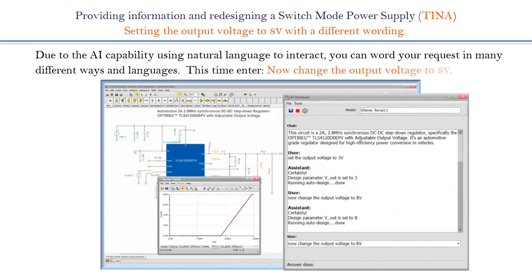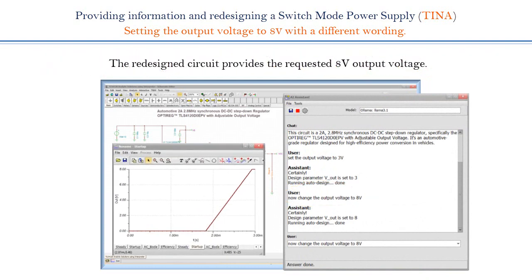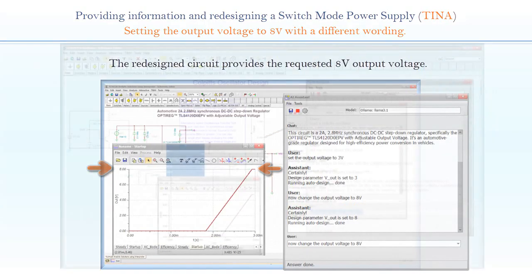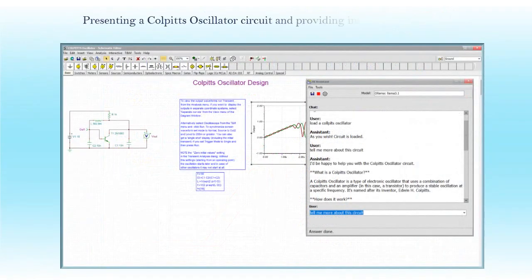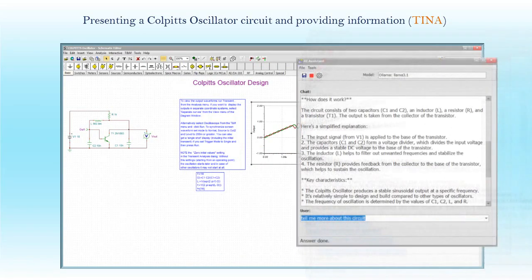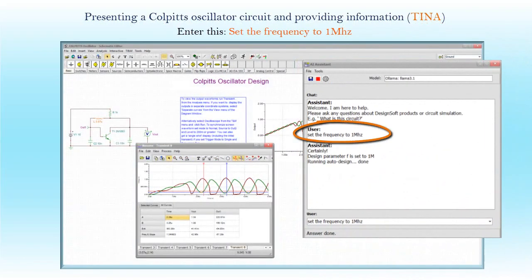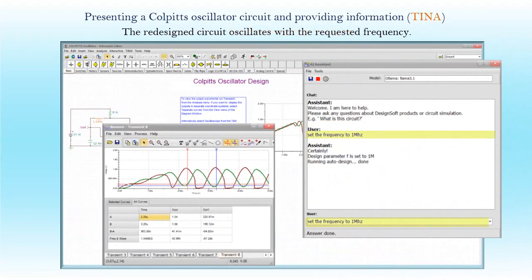This time, enter: 'Now change the output voltage to 8 volts.' The redesigned circuit provides the requested 8-volt output voltage. Next, presenting a Colpitts oscillator circuit and providing information in TINA. Enter: 'Set the frequency to 1 MHz.' The redesigned circuit oscillates with the requested frequency.